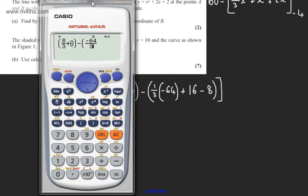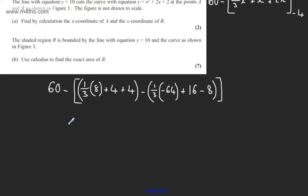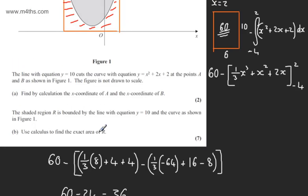So just plugging this in here, minus 64 divided by 3, and then we're going to add to this 8. So let's go ahead and do that. Plugging this in plus the 8, that's going to give us now 24. So we have 60 minus 24 which is going to be equal to 36 square units. So 7 marks in total for part B.